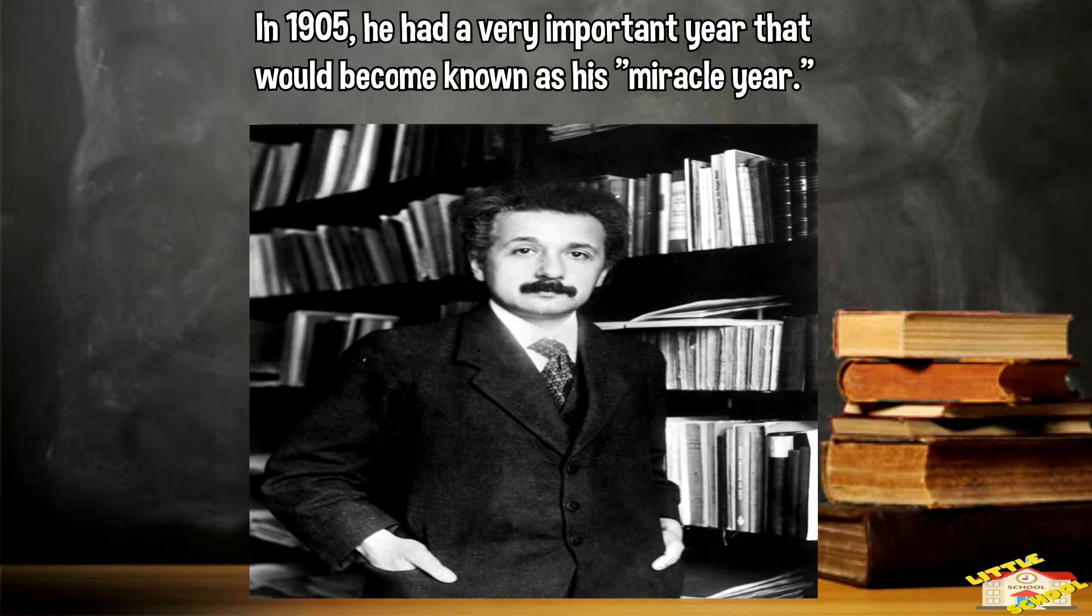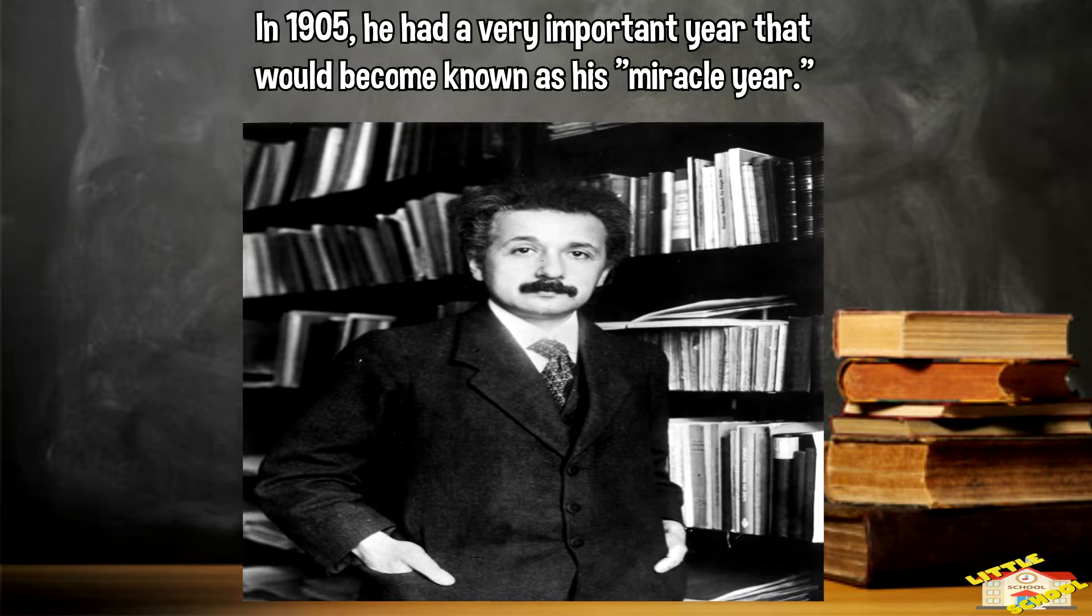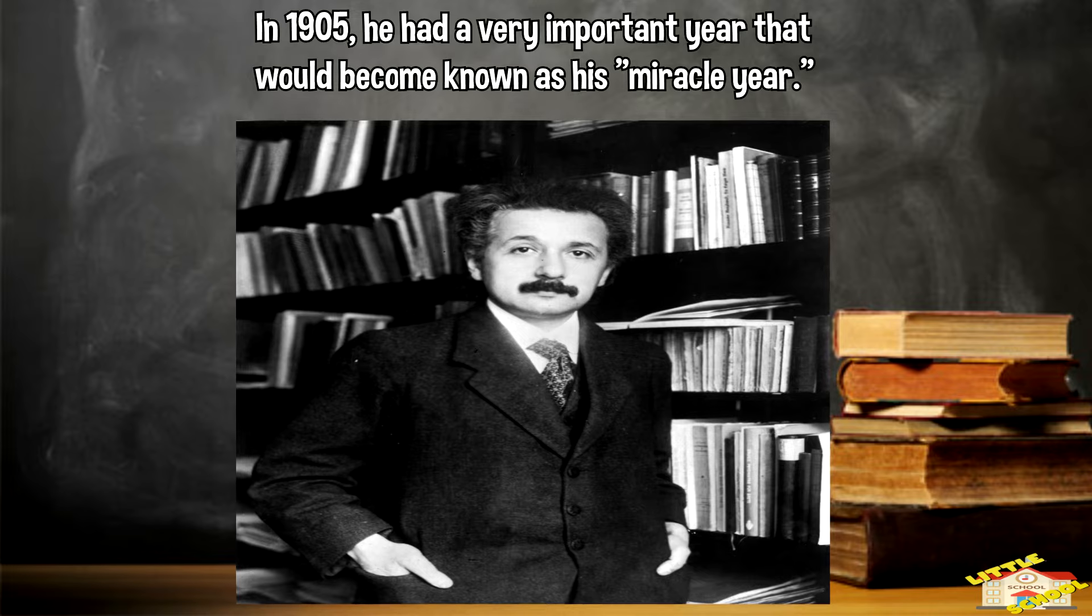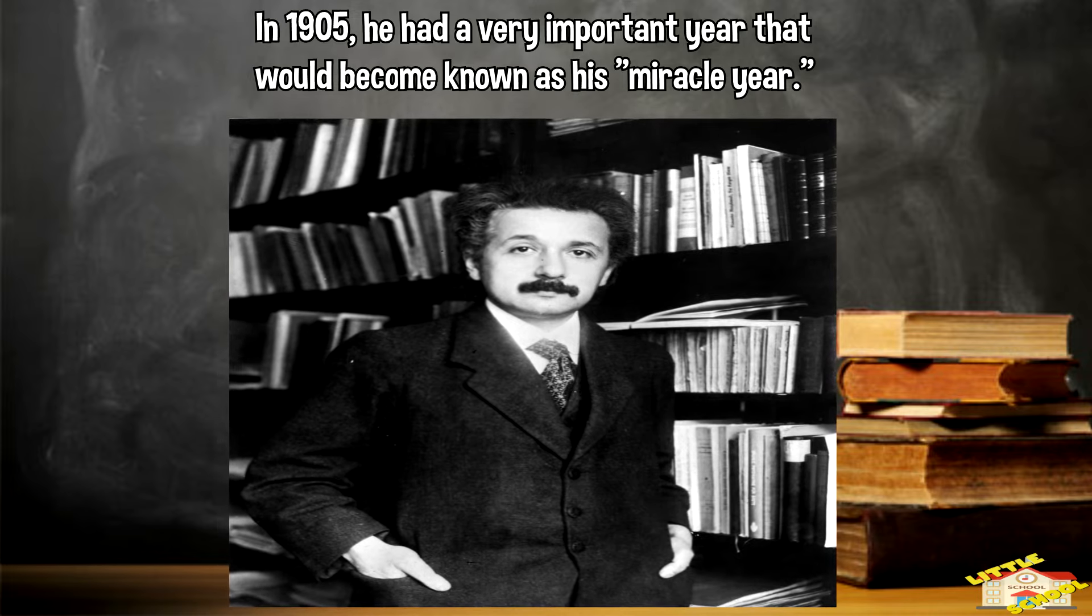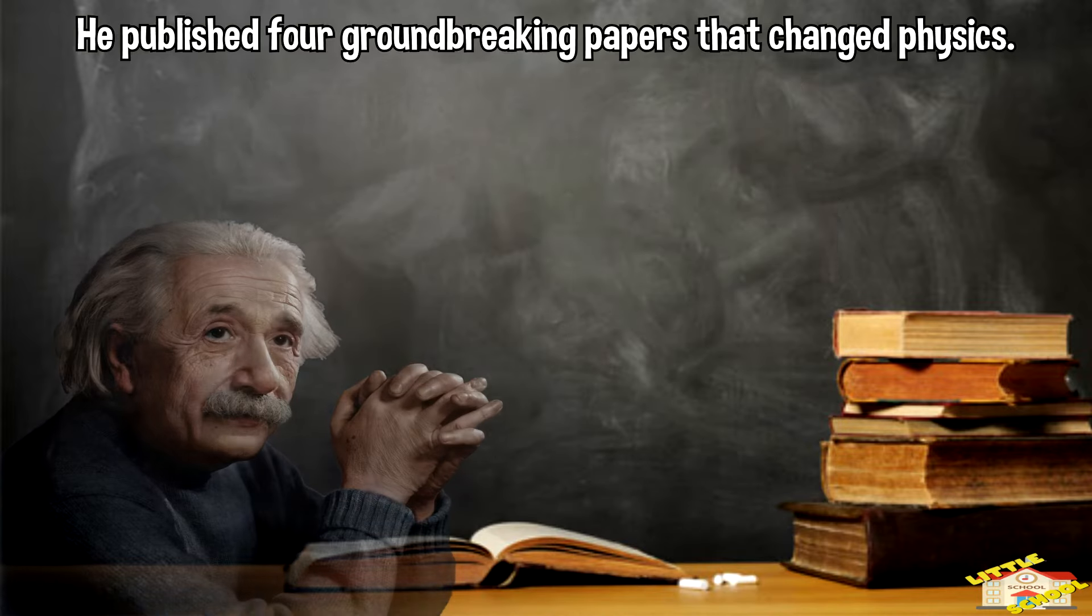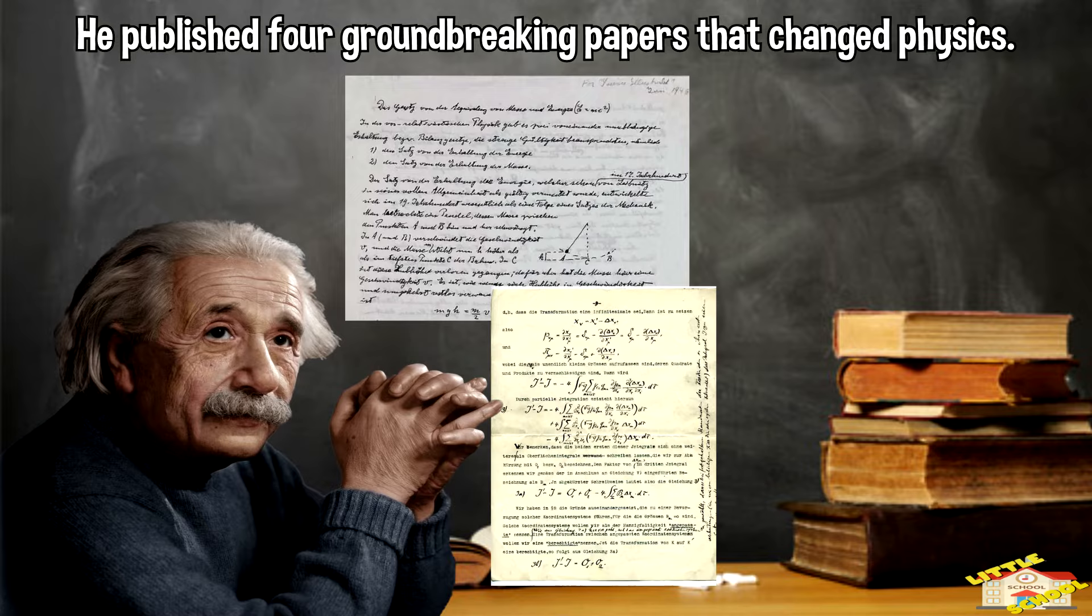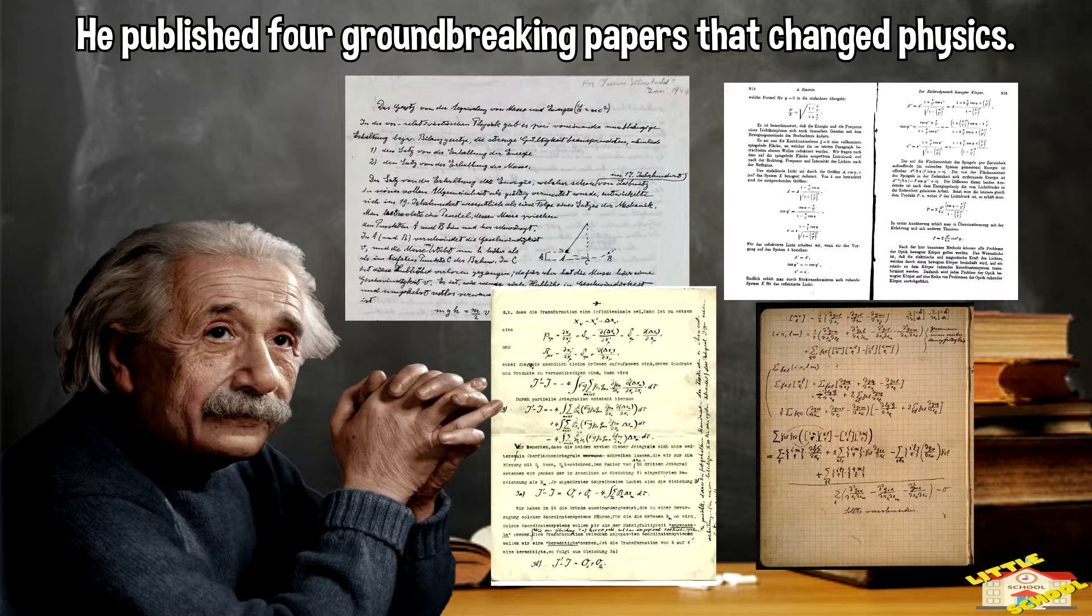In 1905, when Einstein was just 26 years old, he had a very important year that would become known as his miracle year. During this time, he published four groundbreaking papers that changed physics.